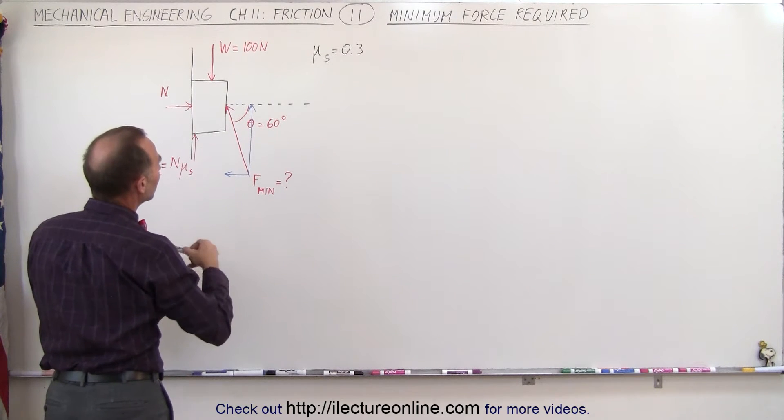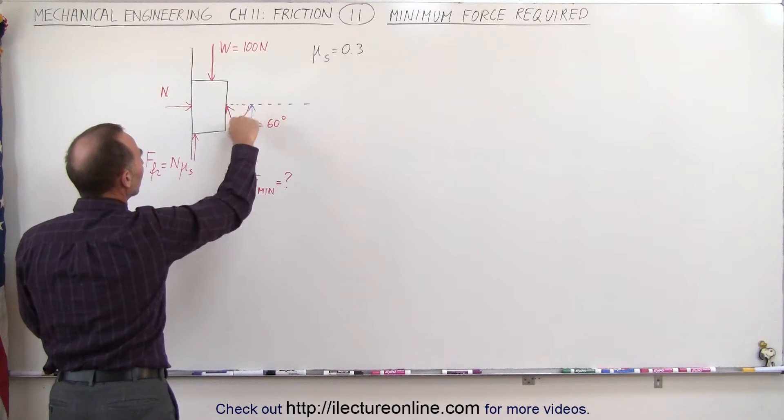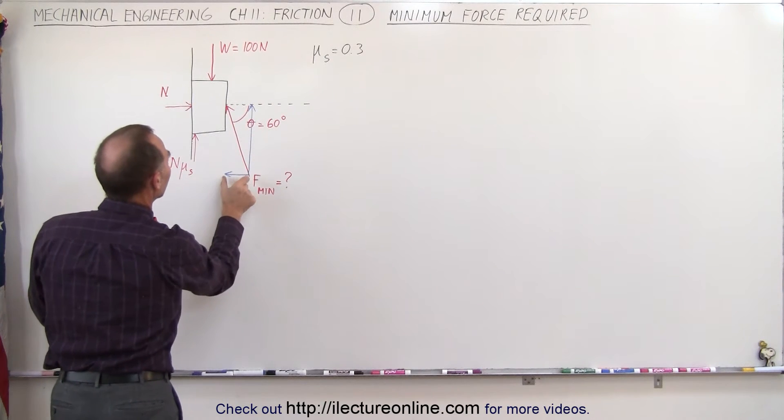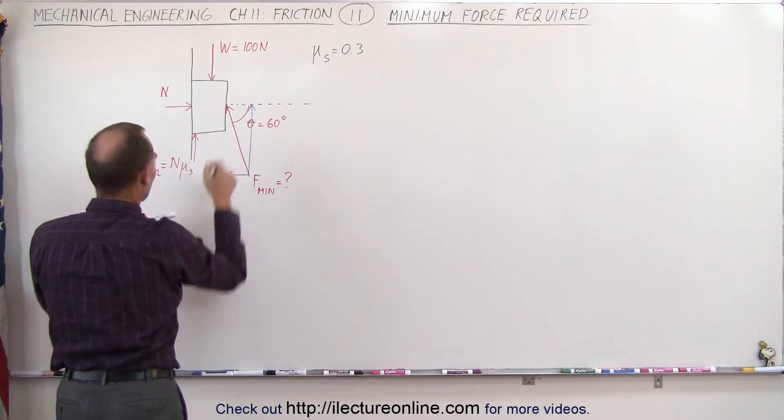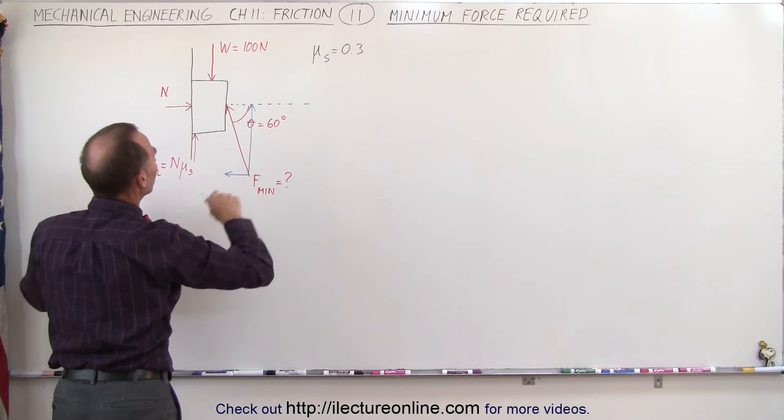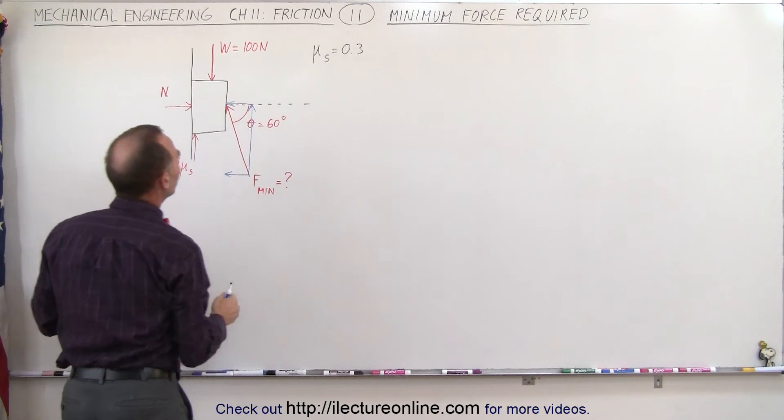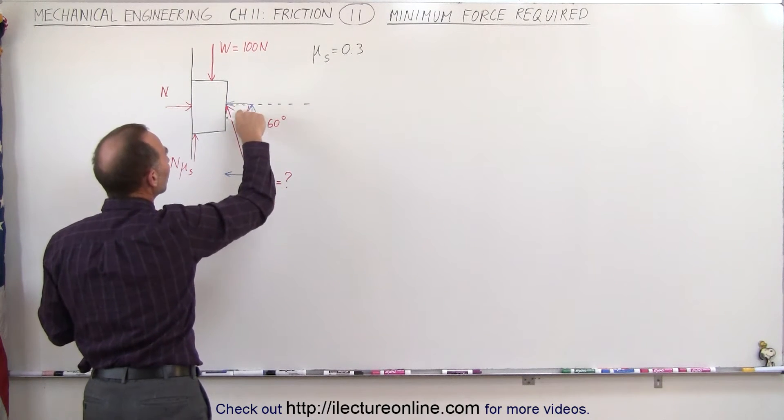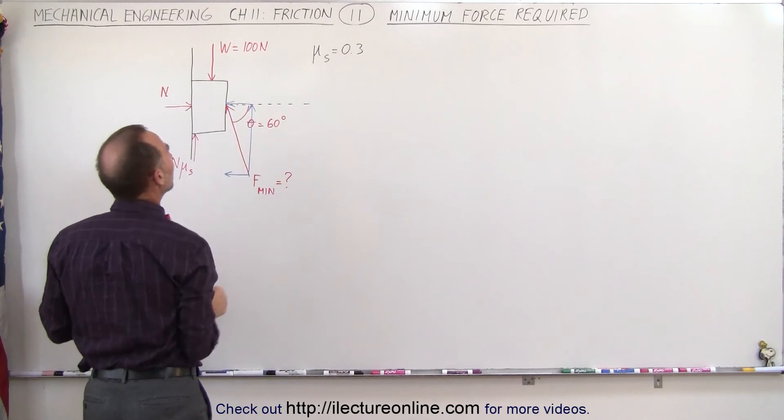Since this angle right here is 60 degrees, that means this is the same as the component up there. We can actually move that component up here and notice that it'll be the adjacent component to the 60 degree angle.